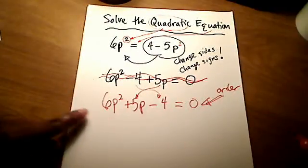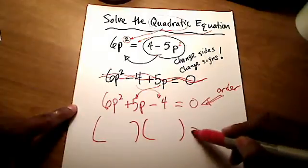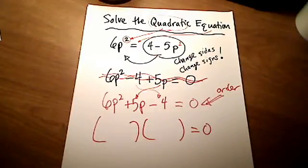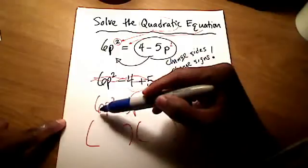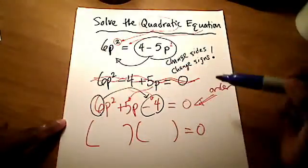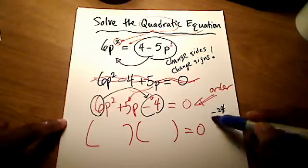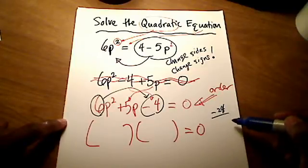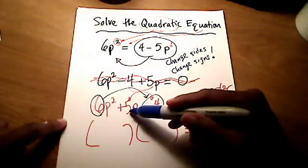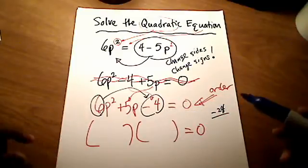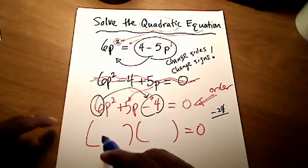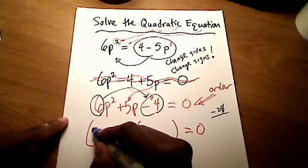The proper way to bring these two terms over and to rewrite this quadratic equation is to start with the p² term, put the p term next, and then put the constant term, the term that doesn't have a p, last. That's the proper order. This is the order we like. So now that we have this in the correct order, we are going to factor this. I'm not going to show you a lot of factoring techniques because I've shown you that in previous videos.